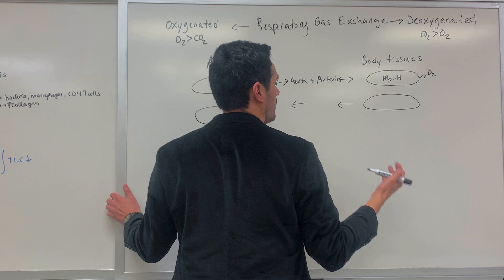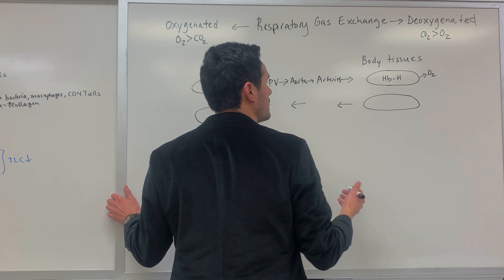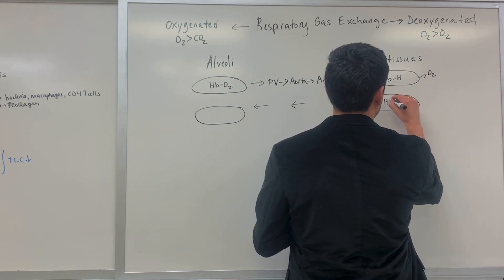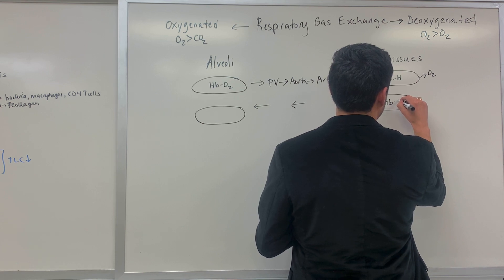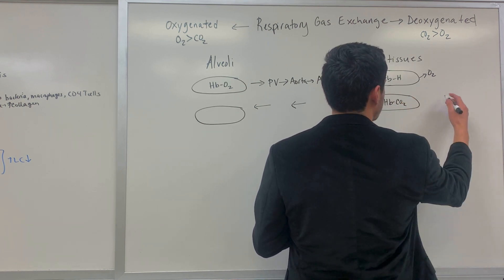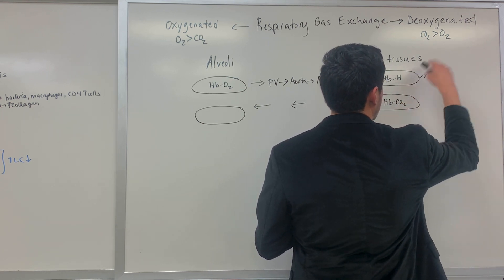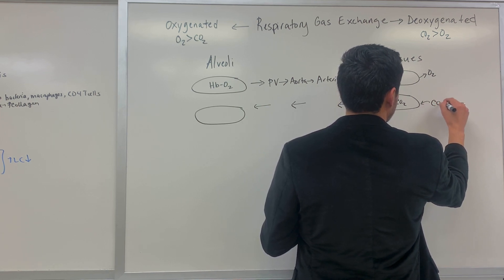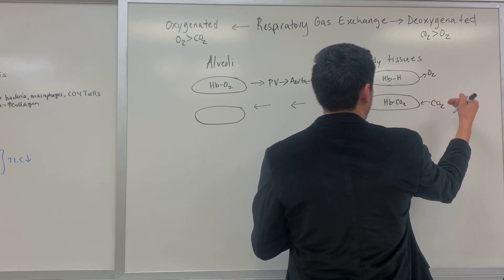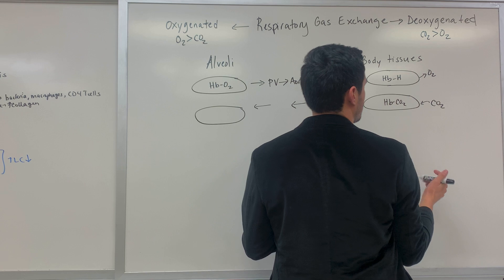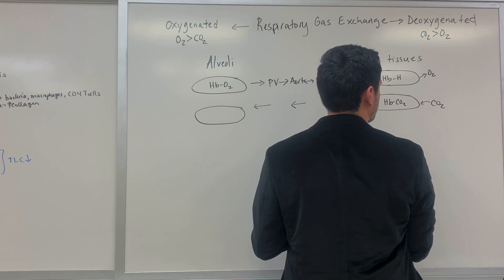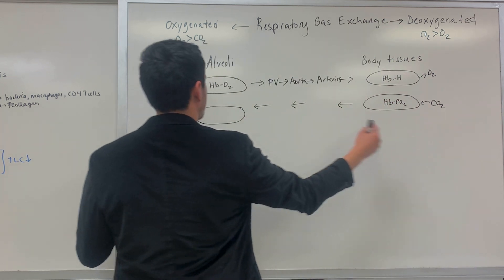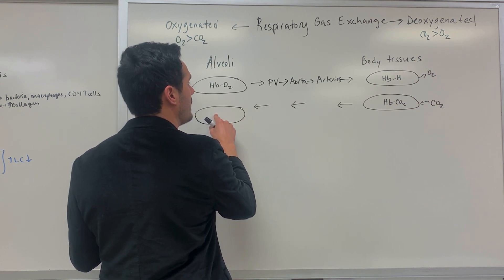What about the transport of carbon dioxide? Hemoglobin is also used to transport carbon dioxide. Once we're dropping off the oxygen, we're picking up the CO2 — it diffuses and binds to hemoglobin, then gets transported back to the alveoli.